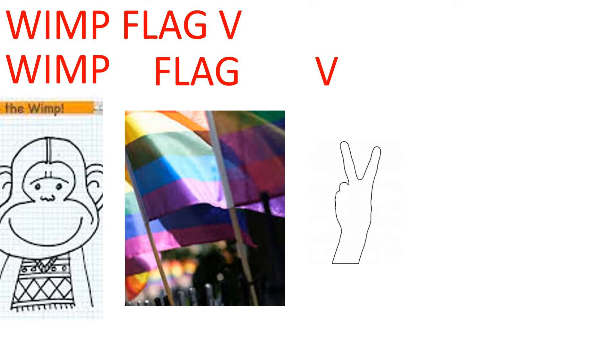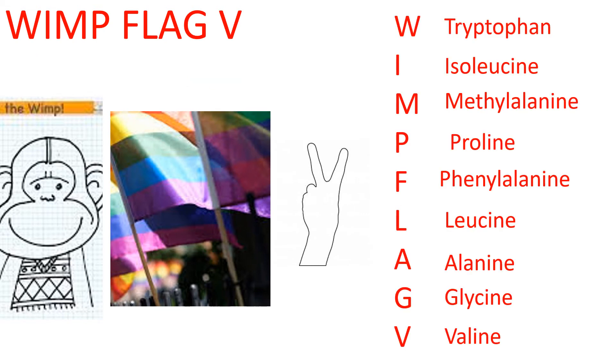Each of the letters in this phrase — W, I, M, P, F, L, A, G, and V — stand for the nonpolar amino acids. So again, begin with me: WIMP has a flag showing the V or victory sign. WIMP flag V represents the different amino acids that are nonpolar.